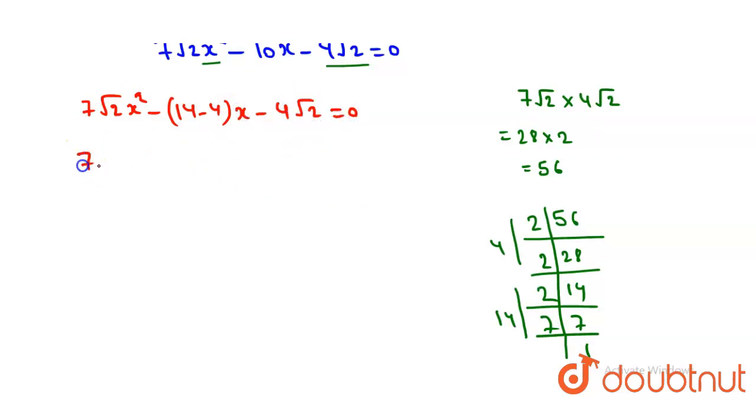Now the next step is 7√2x² - 14x, plus 4x - 4√2 = 0. From 7√2, this coefficient gives us 7 × 2 = 14, so we can factor by grouping.